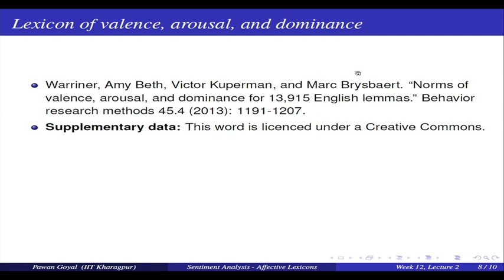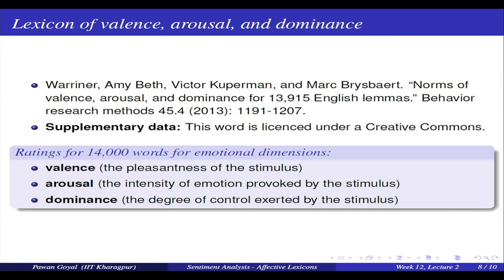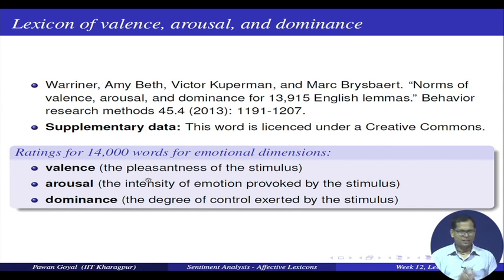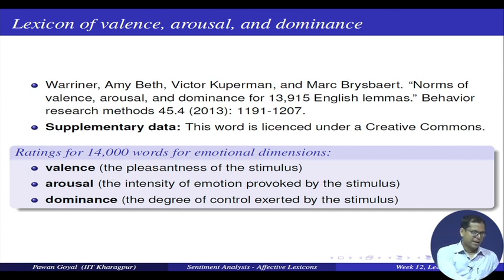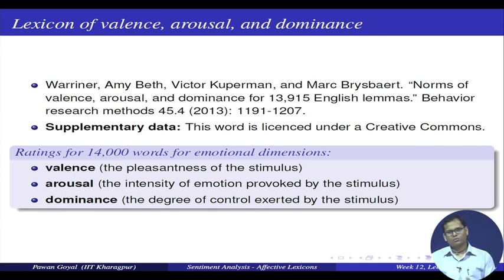There is a lexicon of valence, arousal, and dominance — specifically, norms of valence, arousal, and dominance for 13,915 English lemmas — available under a Creative Commons license for non-commercial use. They took roughly 14,000 words and labelled them for valence (how pleasant or unpleasant), arousal (intensity of emotion — highly aroused or low), and dominance (degree of control by the stimulus).